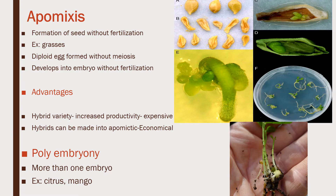Next is apomixis. Apomixis means formation of seed without fertilization, seen in grasses. Apomictic seeds are formed when the diploid egg forms without meiosis — normally the egg should form from meiosis, but here the diploid egg develops into embryo without fertilization. There are many advantages of apomictic seeds: we can produce hybrid varieties from them, and hybrid varieties of several crops are cultivated because of their increased productivity.